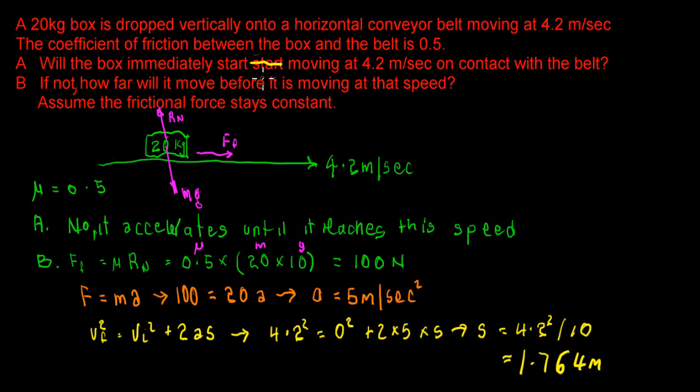B. If not, which is the case, how far will it move before it is moving at that speed? Assume the frictional force stays constant. OK, so if we look at the box, we can see that it has a weight force downwards of Mg and the reaction to that, the normal to the belt Rn. And then we have our frictional force.